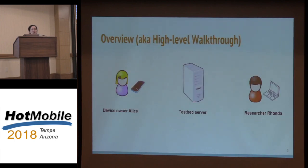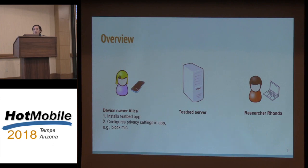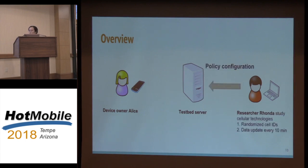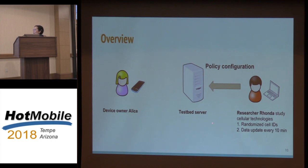Here is a high-level walkthrough of how the entire system works. On the left-hand side, we have a device owner called Alice. We also have a researcher called Rhonda. In between them, we have a testbed server. Alice decides she is going to contribute her device to scientific research, so she downloads and installs our testbed app. She can then configure her privacy settings. She's not comfortable with other people using her mic, so she can disable that. Researcher Rhonda wants to study cellular technologies in her city. She gets IRB approval, and the IRB tells her she can use randomized cell IDs but not real IDs, to protect location. All data has to be updated every 10 minutes.